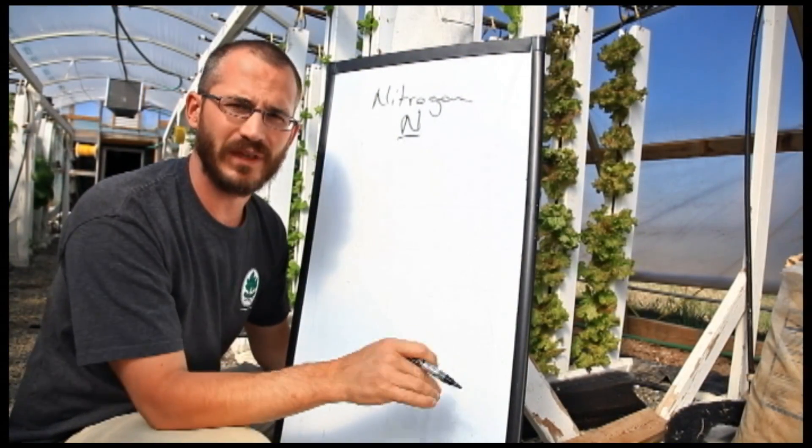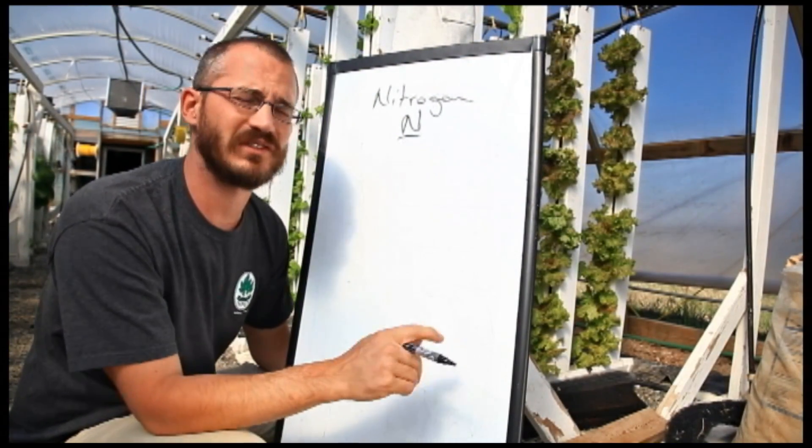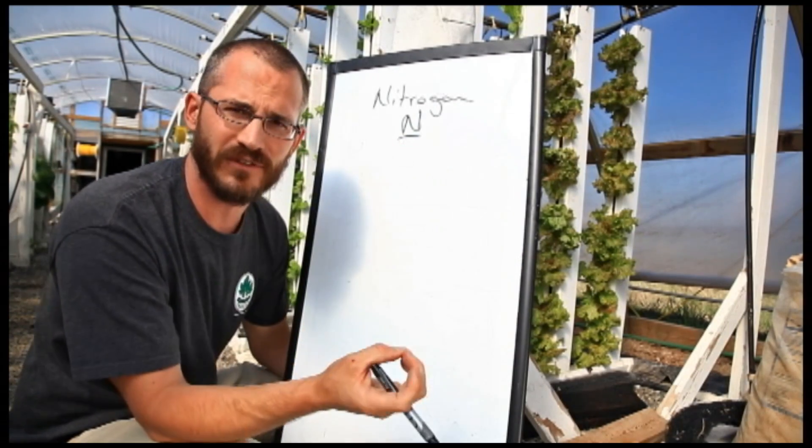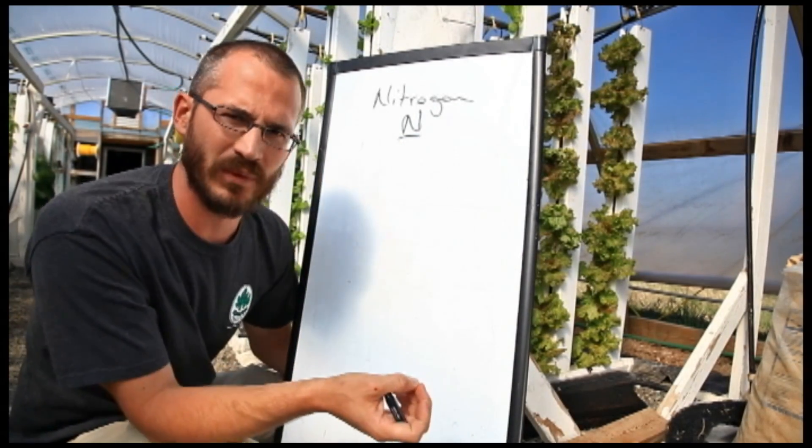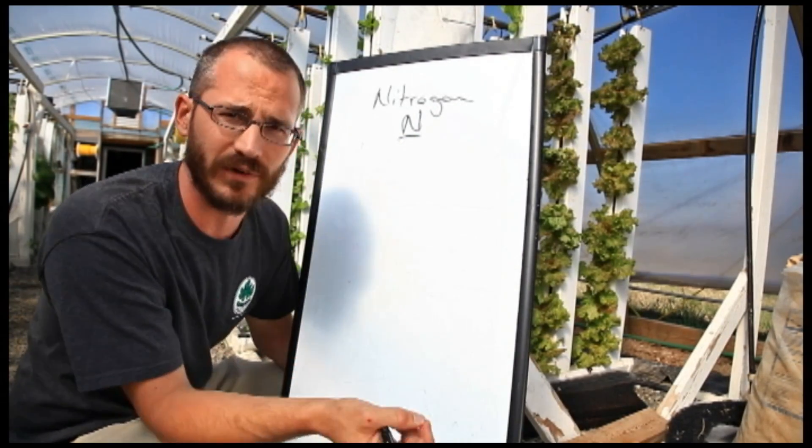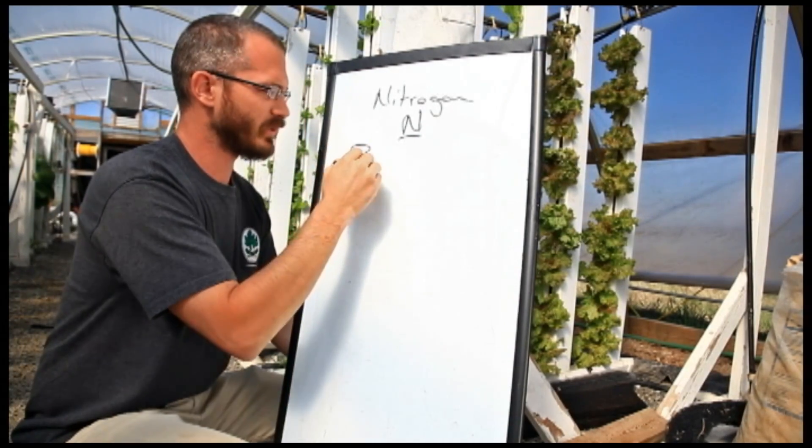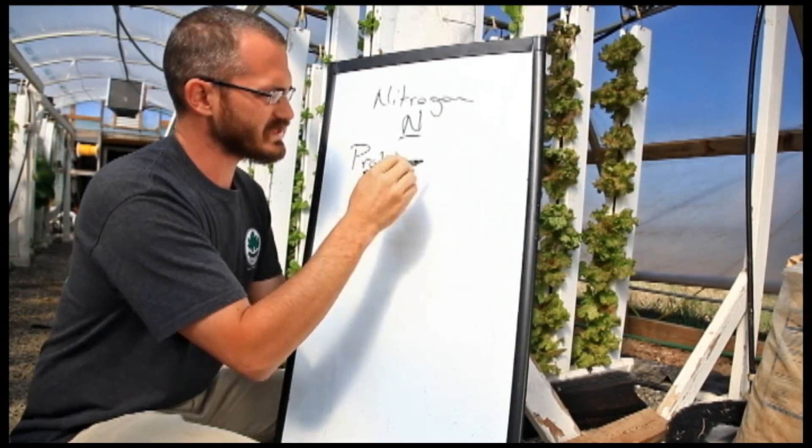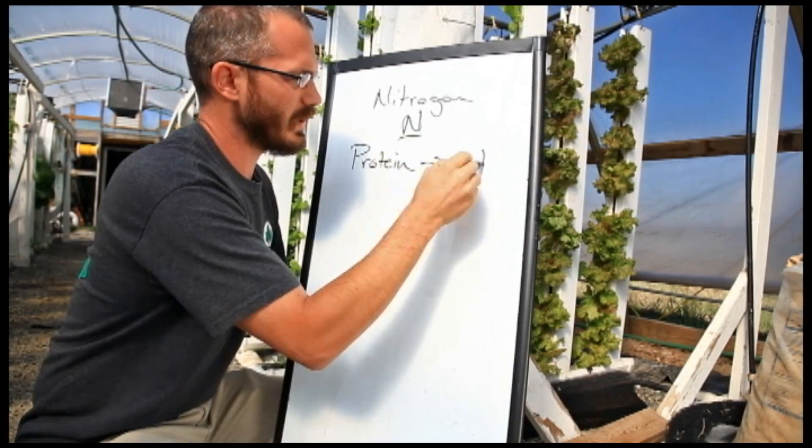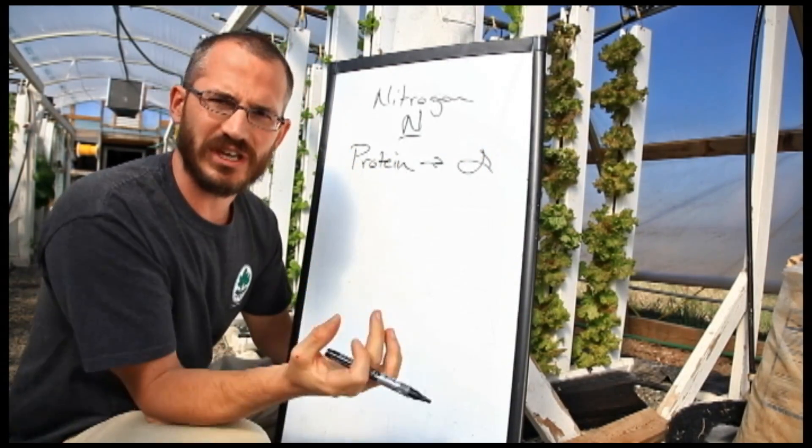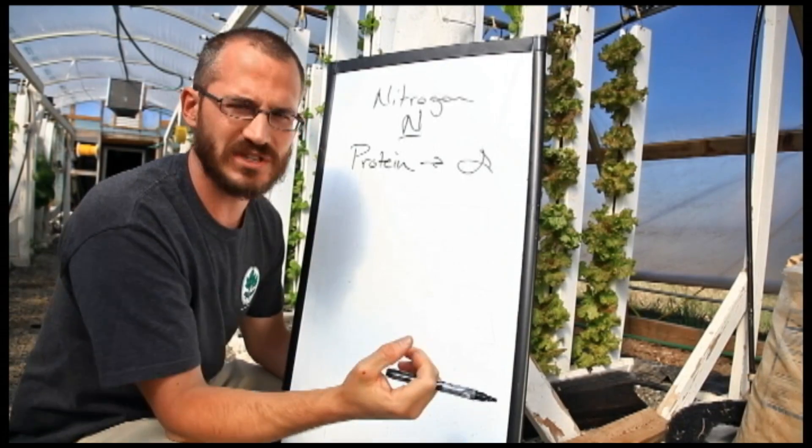Nitrogen goes into our system in the form of protein. This is the protein that's in our fish feed. We're not putting in nitrate or any other chemical fertilizers to supplement nitrogen. It's all in the form of protein. The protein goes in and goes into our fish.